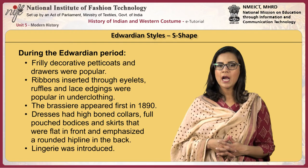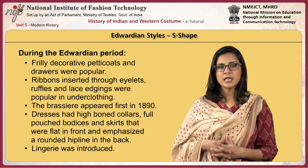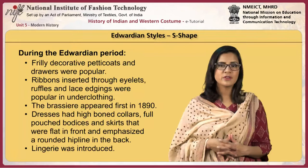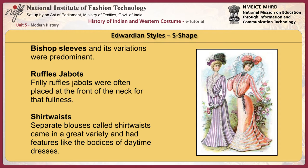Typical dresses had high boned collars, full pouched bodices, and skirts that were flat in front and emphasised a rounded hip line at the back. The popular white frilly cotton or linen dresses with these decorations were referred to as lingerie dresses. Bishop sleeves and their variations were predominant. Frilly ruffles and jabots were often placed at the front of the neck for fullness. The shape of skirts was achieved by goring or panelling. A tailor-made was a woman's suit popularly worn by women.